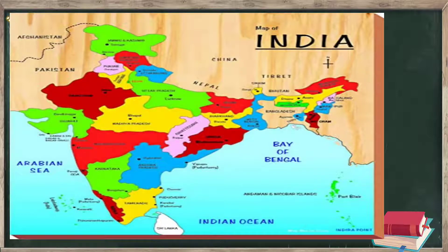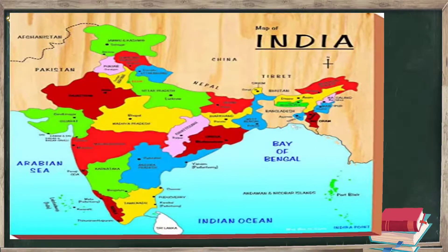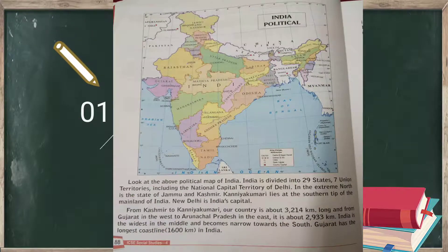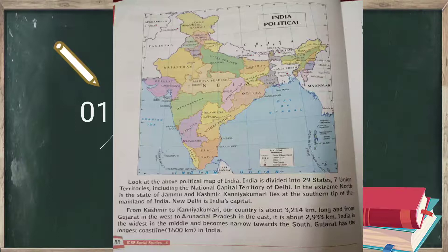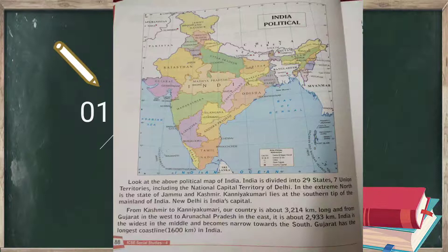We start from Jammu and Kashmir at the top, and at the bottom we have Kerala. In the west we have Gujarat, and in the east there are many states. Looking at the political map, India is divided into 28 states and 9 union territories — previously it was 29 states and 7 union territories.